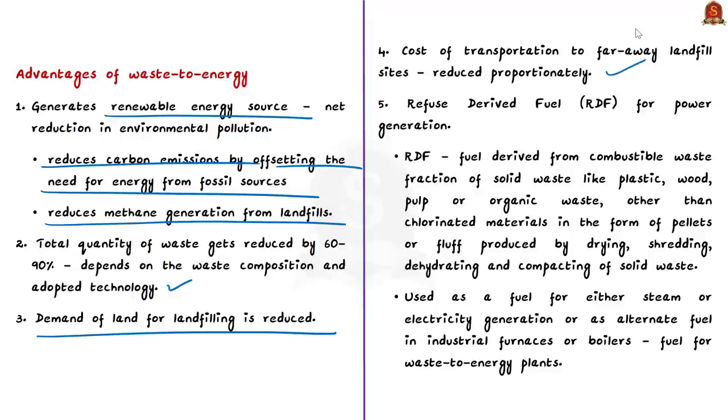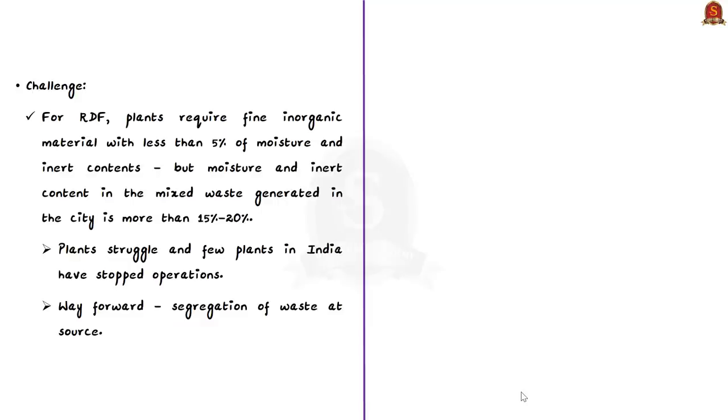In addition to this, there is also the advantage of refuse derived fuel or RDF for power generation. RDF is the fuel derived from combustible waste fraction of solid waste like plastic, wood, pulp or organic waste other than chlorinated materials. It is in the form of pellets or fluff which is produced by drying, shredding, dehydrating and compacting of solid waste. RDF is used as a fuel for either steam or electricity generation or as an alternative fuel in industrial furnaces or boilers. But this has a main challenge. If refuse derived fuel needs to be made, then plants require fine inorganic material with less than 5% of moisture and inert content. Whereas the moisture and inert content in the mixed waste generated in the city is more than 15 to 20%, the plants struggle to make RDF from this waste.